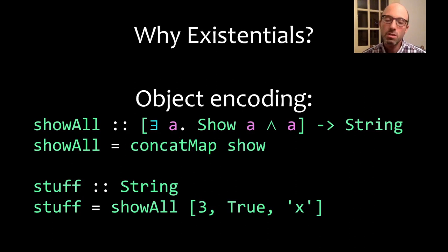Each element in the list has some type A. Each A can be different, but each one has to have a Show instance. In other words, each one can be rendered out to a string. Then the body of showAll can show each element individually and concatenate all the results together.